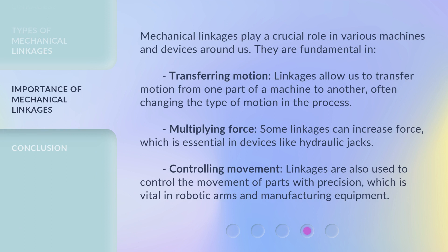Mechanical linkages play a crucial role in various machines and devices around us. They are fundamental in transferring motion — linkages allow us to transfer motion from one part of a machine to another, often changing the type of motion in the process. Multiplying force: some linkages can increase force, which is essential in devices like hydraulic jacks. Controlling movement: linkages are also used to control the movement of parts with precision, which is vital in robotic arms and manufacturing equipment.